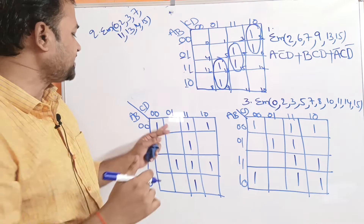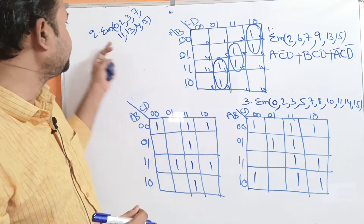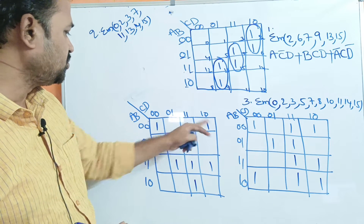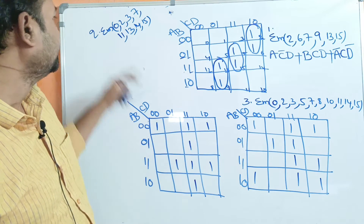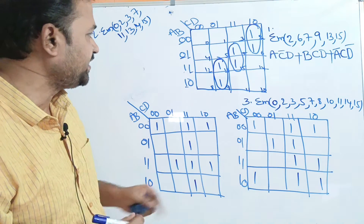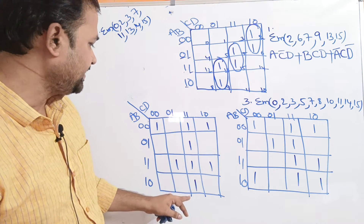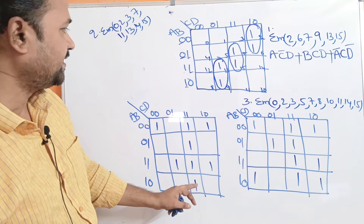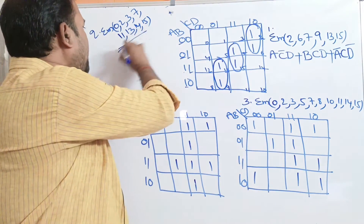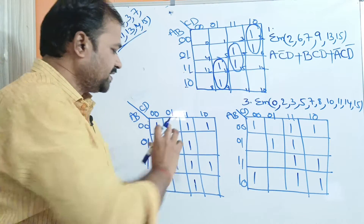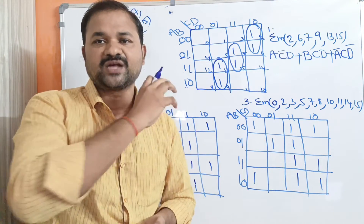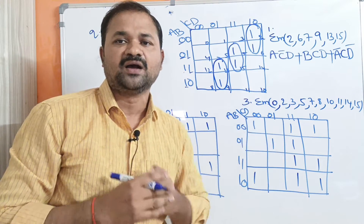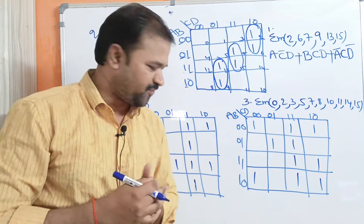Now let us see the second example: σm(0, 2, 3, 7, 11, 13, 14, 15). We place 1s in cells 0, 2, 3, 7, 11, 13, 14, and 15. The problem is now mapped, and we note that the corners of the map contain values.